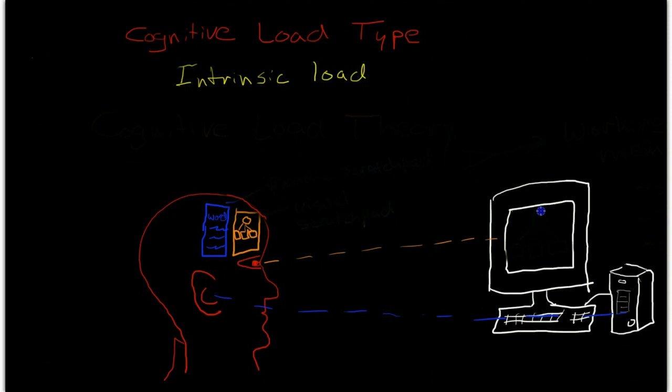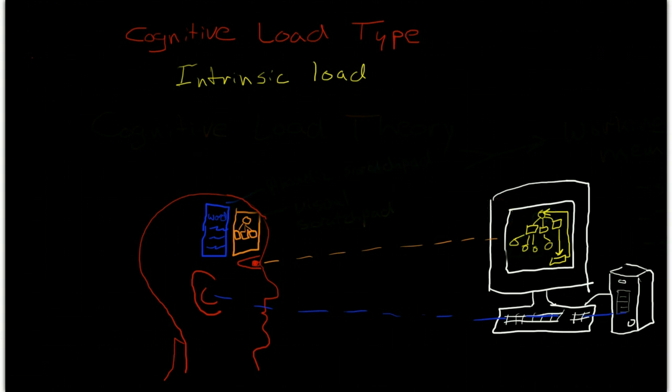The first is intrinsic load. Intrinsic load is related to the complexity of the information that the person is paying attention to and processing. For instance, if this person here is paying attention to an e-learning course and the lecturer is talking about and demonstrating a very complex conceptual map with many, many pieces, then that is going to place a high intrinsic load on the person's visual working memory.